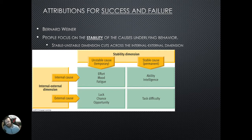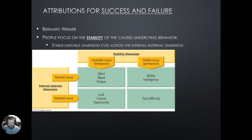The stability of behavior is broken down into an unstable cause and a stable cause — meaning some things are temporary while others are permanent. For example, things within a person that could be considered temporary or likely to change include effort, mood, or fatigue. These cut across the internal-unstable dimension: within a person, but also changeable.